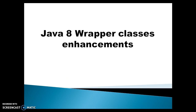Hello friends, my name is Kishan and welcome to this video tutorial. In this video we are going to talk about the Java 8 wrapper classes enhancements. In Java we know that there are 8 primitive types and we have corresponding wrapper classes. Java is an object-oriented language and objects are everything in Java, so sometimes if you have a primitive type you need to express it in the form of an object.